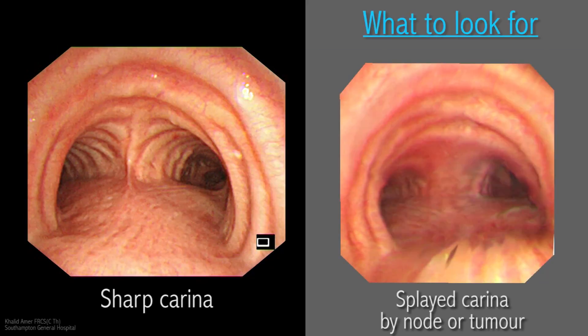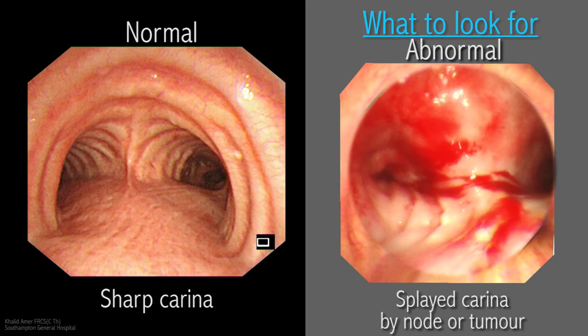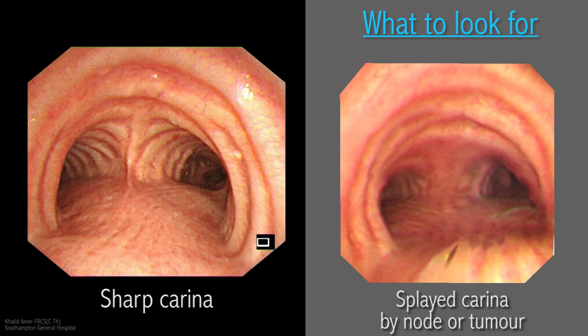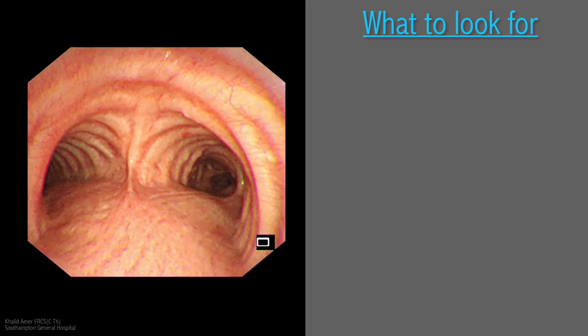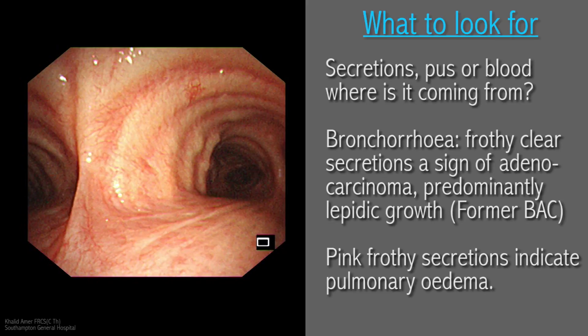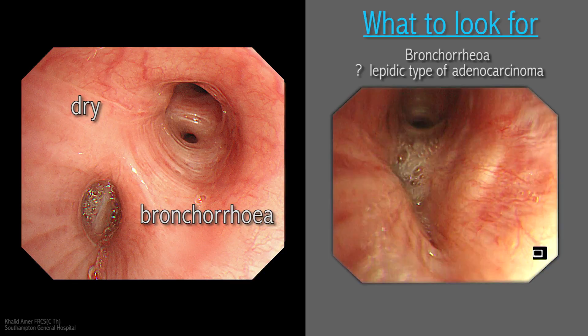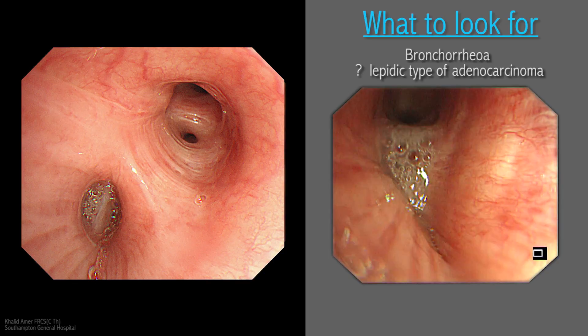The primary carina C1 is usually very sharp, in contrast to a splayed or widened carina. A splayed carina signifies underlying enlarged subcarinal lymph nodes in station 7, or malignant expanding bronchial or oesophageal tumour directly splaying the carina. General assessment of the airway is important and can predict postoperative complications. The operator should take note of secretions, pus, or blood in the airways and note the anatomical site of origin. Excessive clear frothy secretions are called bronchorrhoea and signify the presence of adenocarcinoma, lipidic type, previously known as bronchiolo-alveolar carcinoma.